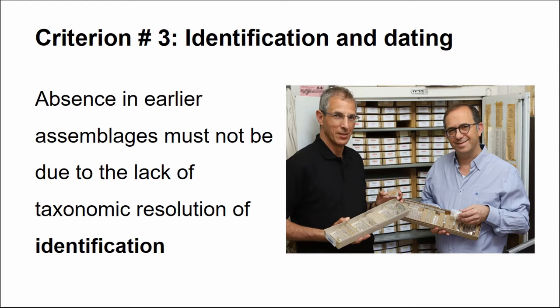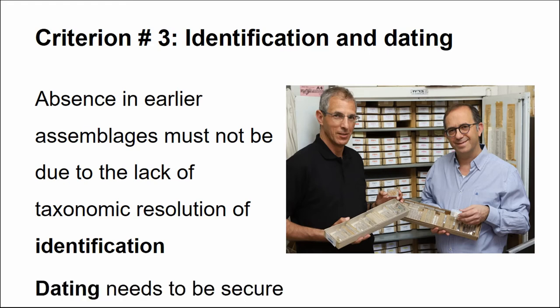Criteria number three: identification and dating. Absence in earlier assemblages must not be due to lack of taxonomic resolution. You need an adequate reference collection to securely identify the finds. Our reference collection, geared specifically towards the southern Levant with basically full coverage, addresses this. Dating also needs to be secure.